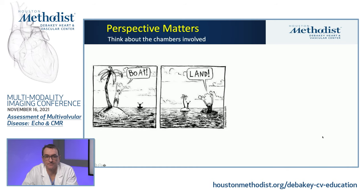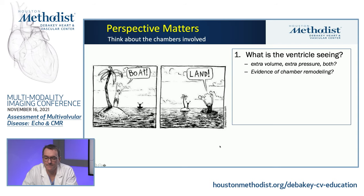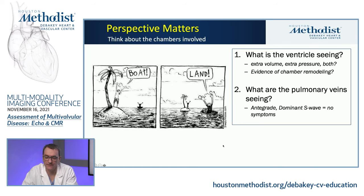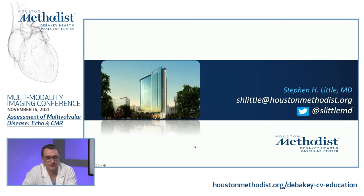In summary for the echo component: perspective matters. For AS and AR, consider volume and pressure load. For AS and MR, AS can be tough to quantify — MR is augmented by high LV pressure and it can be challenging to determine treatment priority, usually the aortic valve first. MR and MS often coexist leading to very large LA volume. For MR and TR, they may be independent or related. Key questions: what is the ventricle seeing — extra volume, extra pressure, or both? What are the pulmonary veins seeing? That concludes the echo component.